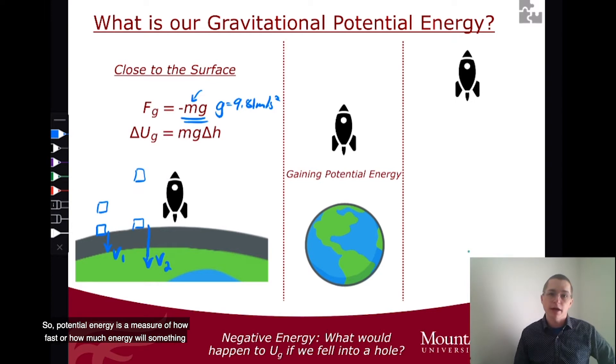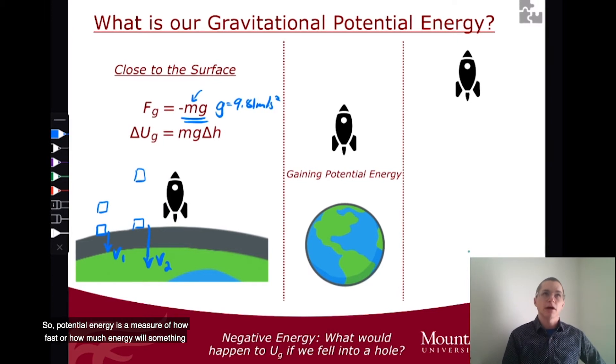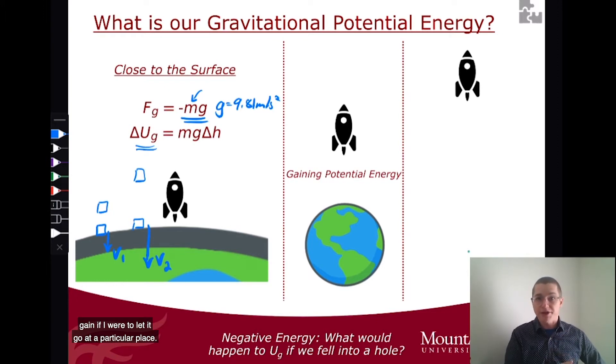So potential energy is a measure of how fast or how much energy something will gain if I were to let it go at a particular place. And that depends partly on this change in height or how far it ends up falling.